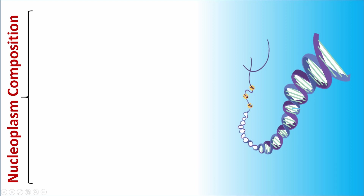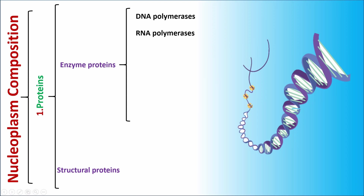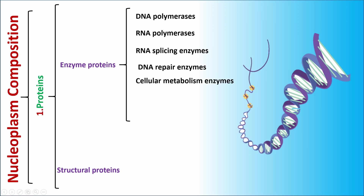Nucleoplasm composition can be divided into three parts. The first part is proteins, which can be divided into two groups: enzyme proteins and structural proteins. Enzyme proteins include DNA polymerases, RNA polymerases, RNA stabilizing enzymes, DNA repair enzymes, cellular metabolism enzymes, pyruvate kinase, and NAD+ synthase.